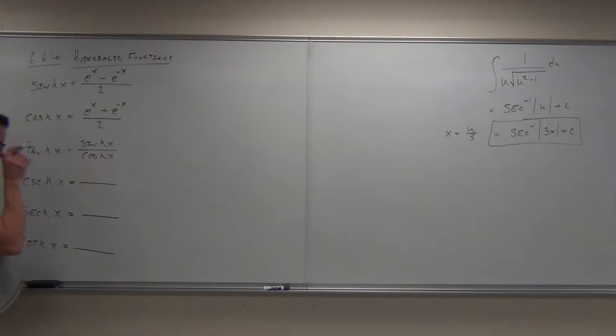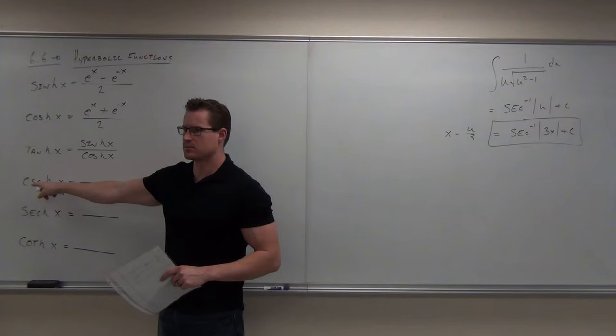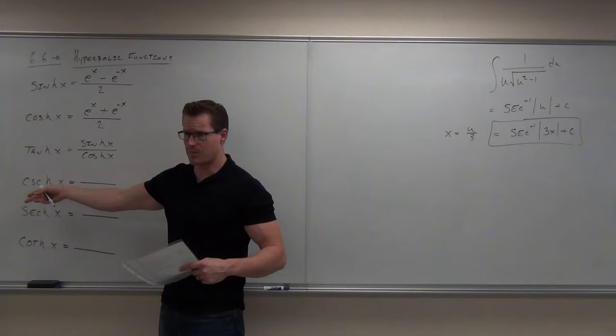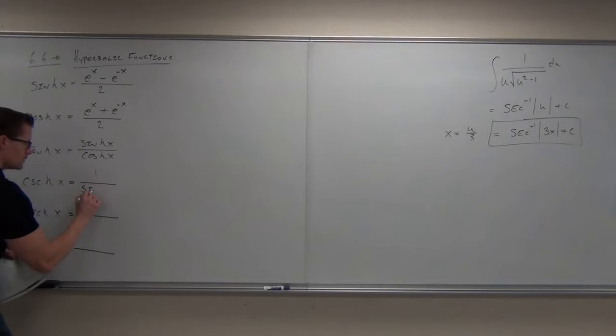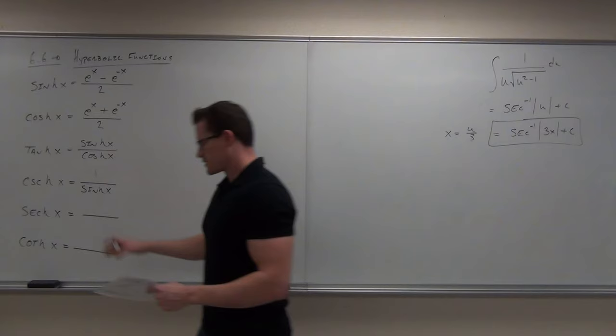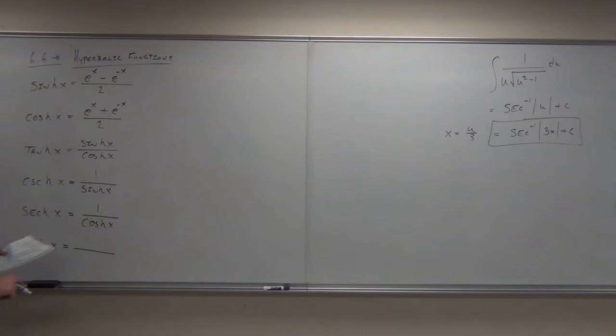For the reciprocal functions: cosecant is 1 over sine, so hyperbolic cosecant is 1 over cinch — hyperbolic sine. Hyperbolic secant is 1 over cosh. And since hyperbolic tangent equals cinch over cosh, hyperbolic cotangent is cosh over cinch. It is the reciprocal.